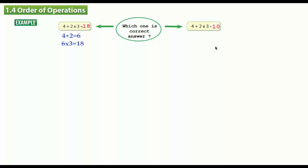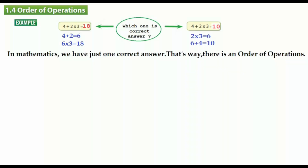Now let's look at the same question: four plus two times three, but starting with multiplication first. Two times three equals six, and four plus six equals ten. In mathematics, we have just one correct answer — that's why there is an order of operations.